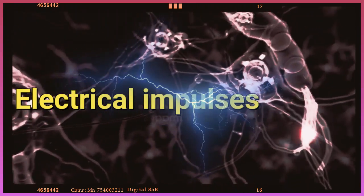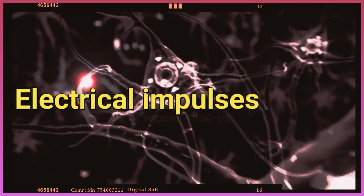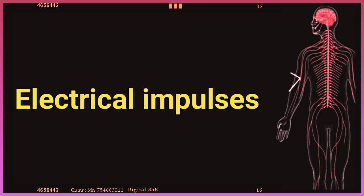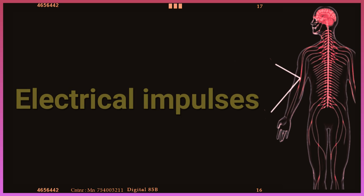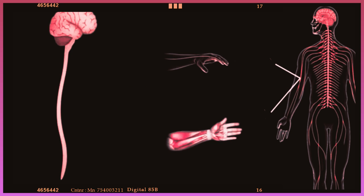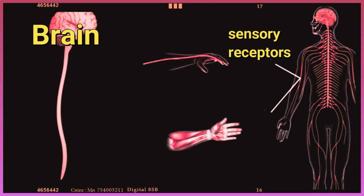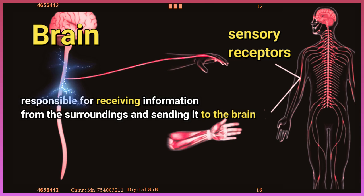Electrical impulses? Yes, your nerves carry messages in the form of electrical signals called nerve impulses. The sensory organs — eyes, ears, nose, tongue, and skin — contain a special type of nerves known as sensory receptors. They are nerves found in different places of the body, and they are responsible for receiving information from the surroundings and sending it to the brain.